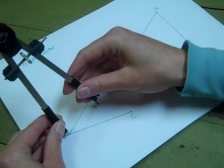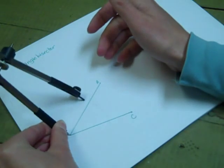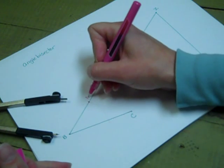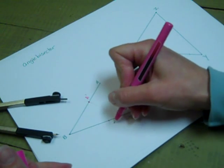So I am going to make an arc that goes through my angle and create two points which I'll label as A' and C'.